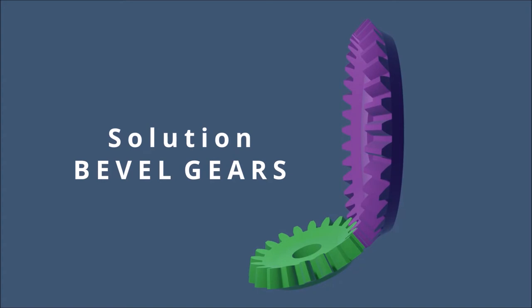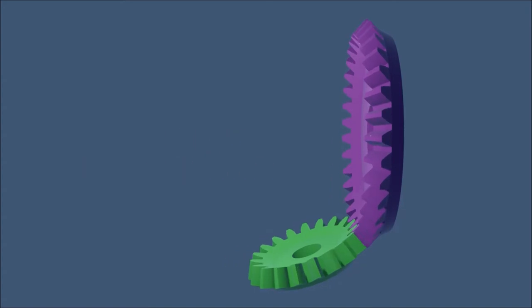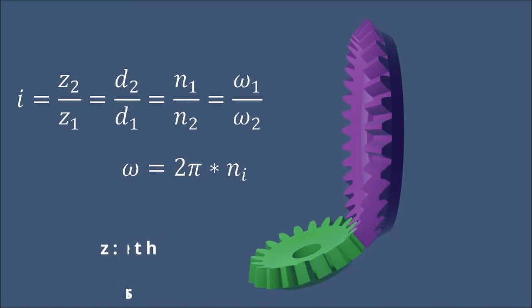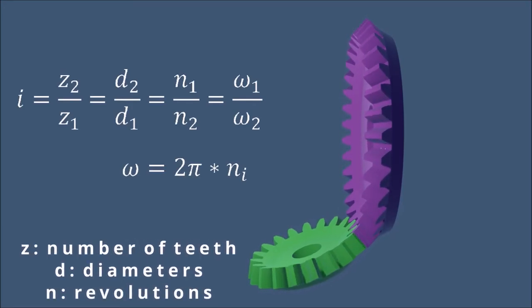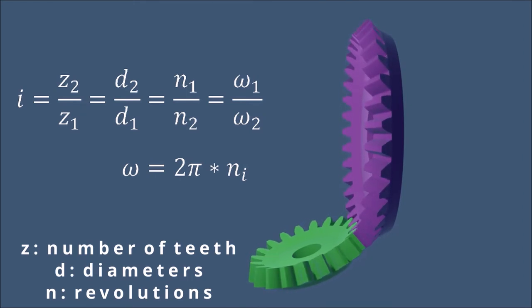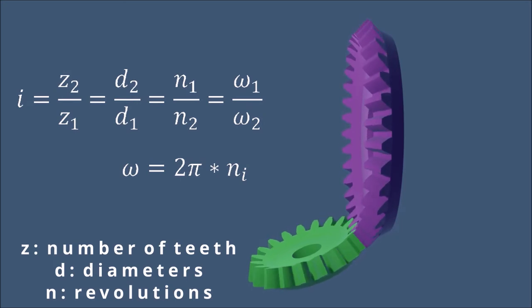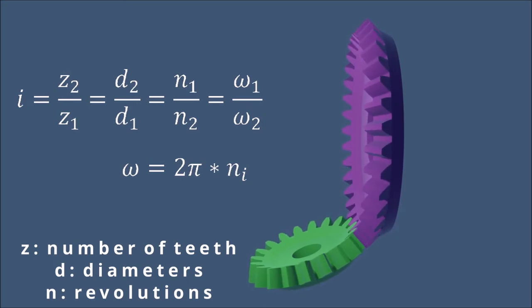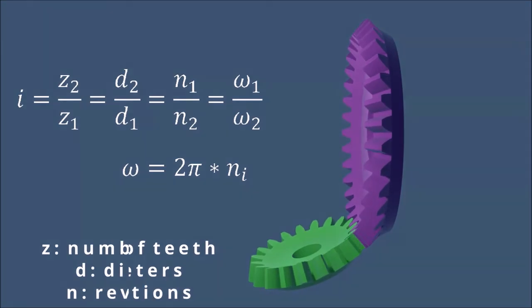The rotation is maintained while the operating angle can vary. The transmission ratio can be expressed as different relations: either between the number of teeth, the diameters of the gears, the numbers of revolution, or the angular velocity. The angular velocity can be calculated as 2π times the revolution number of a gear.